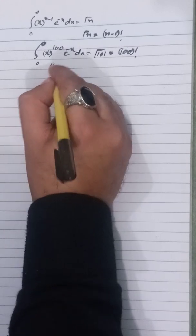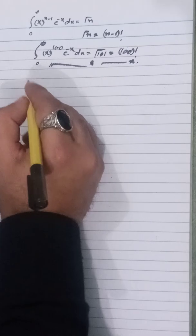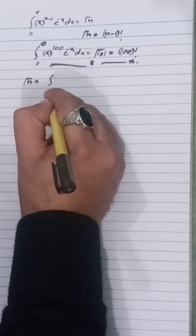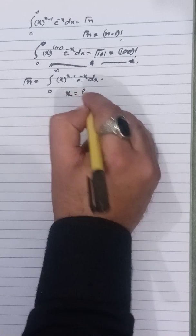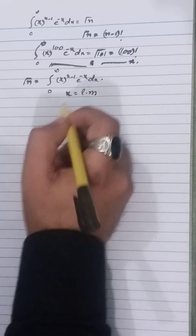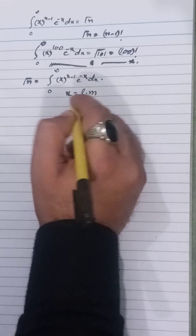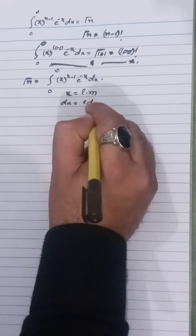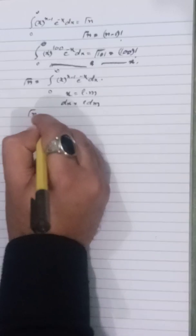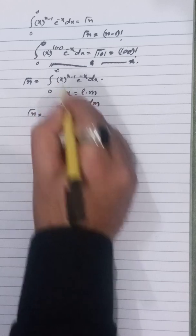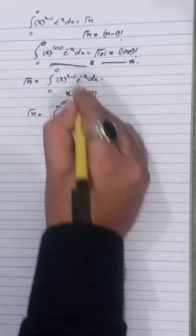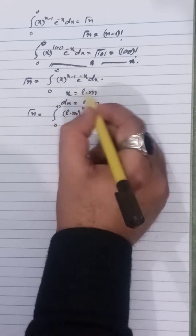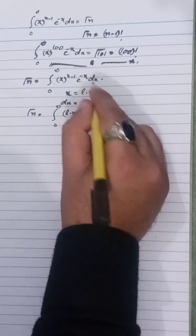Now, what is the relationship between the gamma function and the zeta function? We know that Γ(n) = ∫₀^∞ x^(n-1) e^(-x) dx. Let x = lm, where l is a constant and m is a variable. Then dx = l dm.